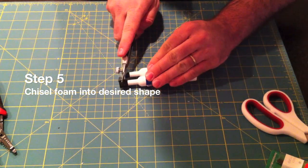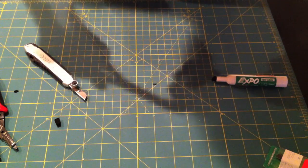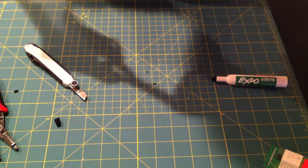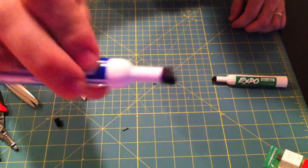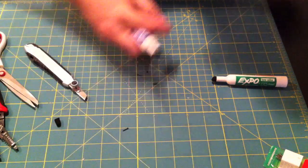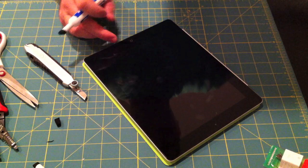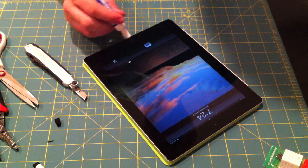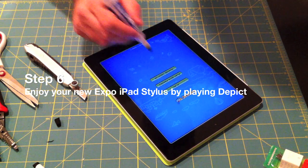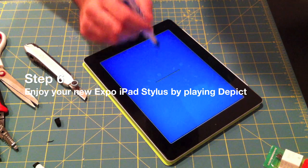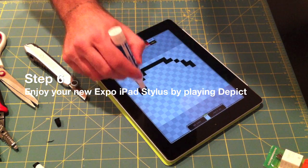For our final step, all we have to do is cut the foam into a chisel shape, and clean it up with the scissors. There we go. Chisel tip, whiteboard marker. Let's go ahead and see if it works. Works like a charm.